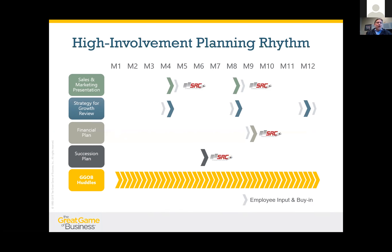The second part of the process is a strategy for growth review, done on either a quarterly or trimester rhythm. We use a trimester rhythm at SRC Holdings — so every four months, the leadership team gets together to talk about long-term and short-term strategy, identifying specific strategic priorities to focus on over the next three to four months, while continually chipping away at the long-term strategies of the organization. That frequency allows us to constantly adjust the plan accordingly to the marketplace.